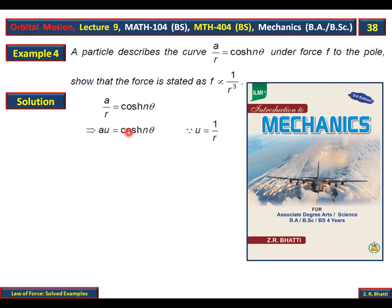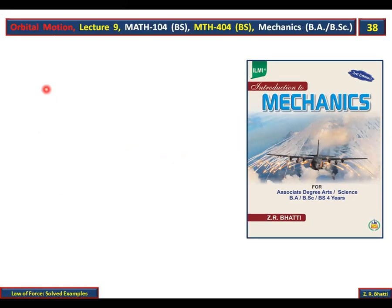We'll solve it with the steps. First replace r by 1 over u. So u equals cosine hyperbolic n theta, u equals 1 over r. Now write d u d theta and then write the differential equation of the orbit. The differential equation is f over h squared u squared plus d squared u d theta squared plus u.